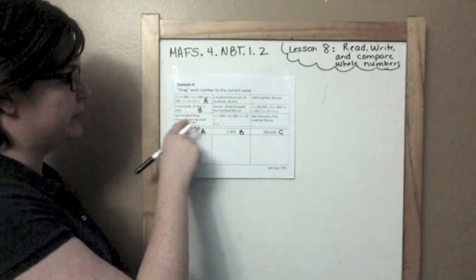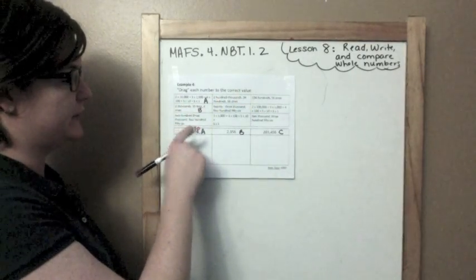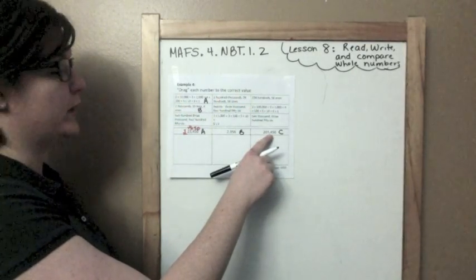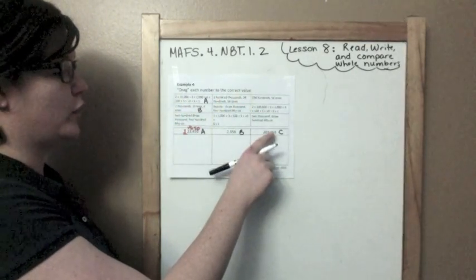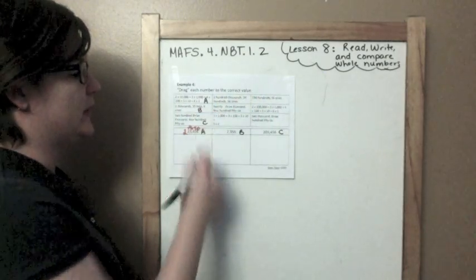2,003,456 — that belongs with this one. It's the word form of this number. So I'm going to put C here.